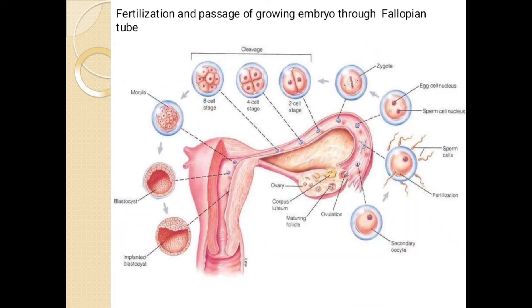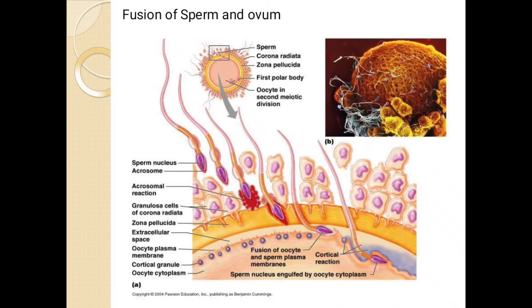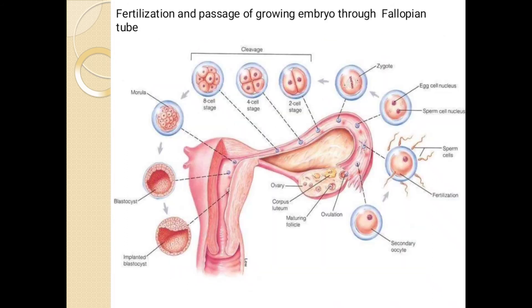So this is the fusion of sperm and ovum. The second stage is fertilization and passage of the growing embryo through the fallopian tube. Once the zygote is formed, mitotic division begins. The zygote moves through the isthmus of the oviduct towards the uterus — this movement is called cleavage.